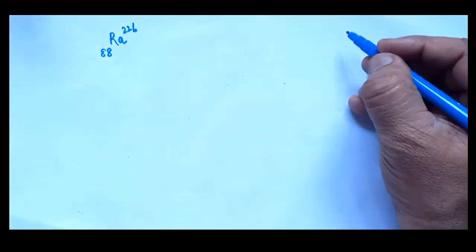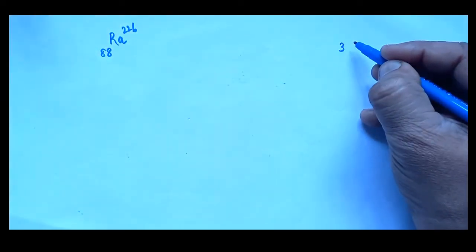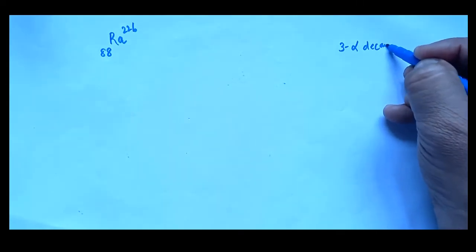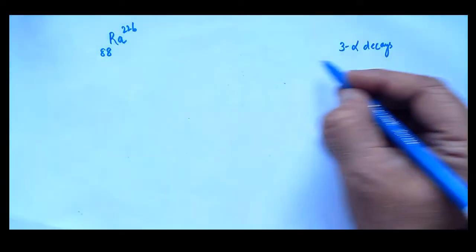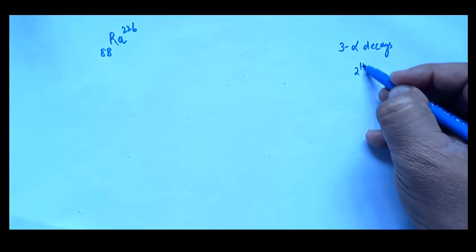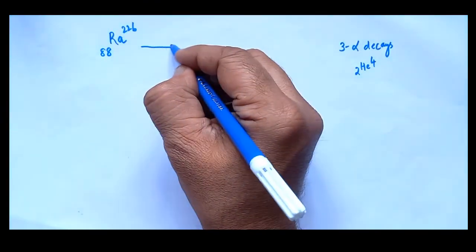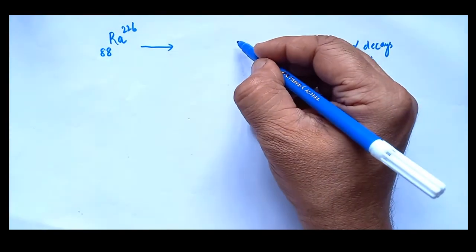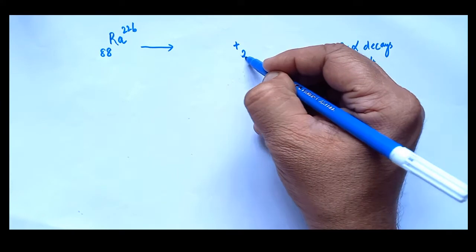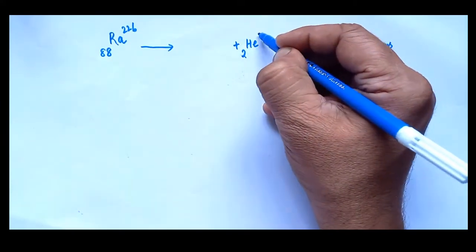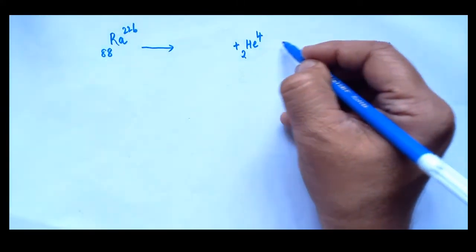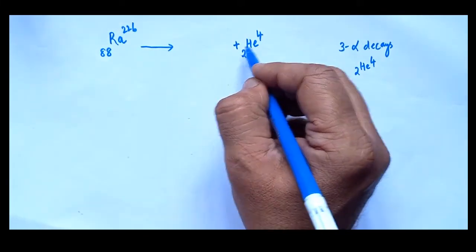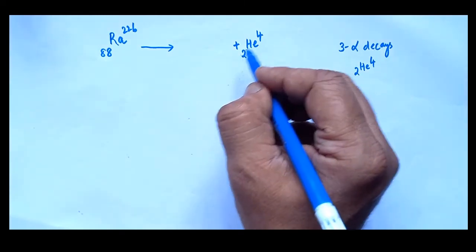There are three alpha decays to be followed — that you should not forget. We know the symbol for alpha is 2He4. So here, drawing the arrow: radium undergoes its first alpha decay, emitting 2He4. After emission of the first alpha particle, one daughter element will be formed.